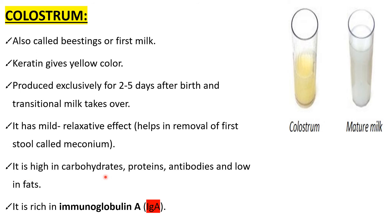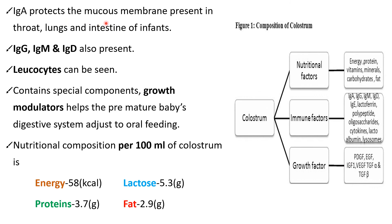Colostrum is high in carbohydrates, certain proteins, and some antibodies, but low in fats. It is rich in immunoglobulin A, which is a secretory antibody. Immunoglobulin A protects the mucous membranes present in the throat, lungs, and intestine of infants from infections. Along with immunoglobulin A, immunoglobulin G, immunoglobulin B, and immunoglobulin D are also present. Leukocytes can also be seen in colostrum to help fight against harmful bacteria and viruses.